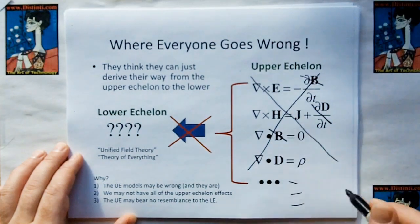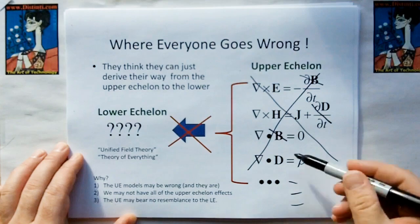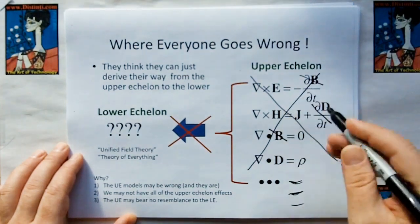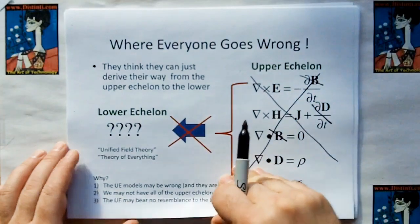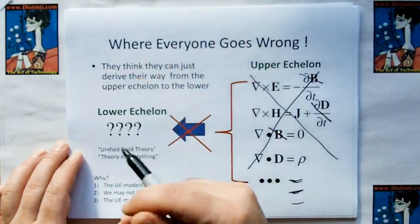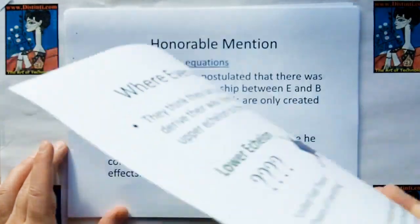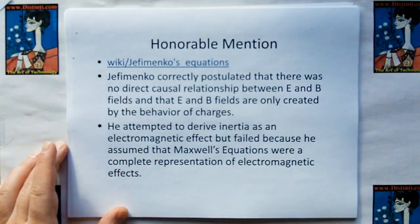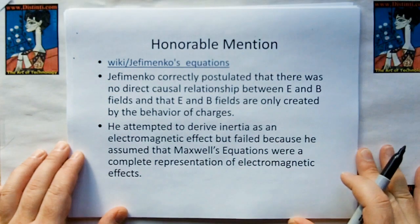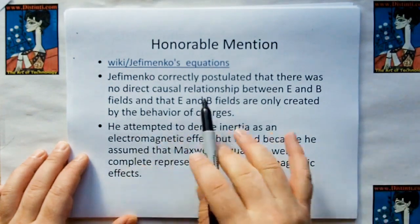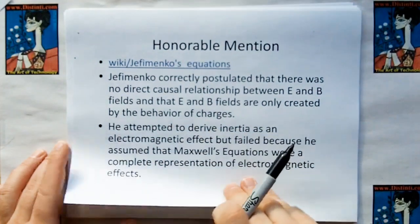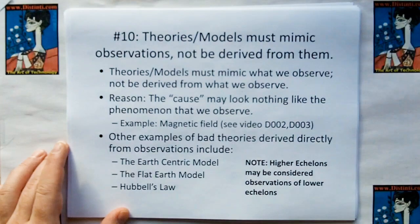And there may be other effects here that we aren't aware of as yet, which there is, because new electromagnetism shows there's at least two other effects that aren't included, even if these were right. And so then again, the upper echelon may bear no resemblance to the lower echelon. That's part of the problem. Although I have to give honorable mention to a man by the name of Jefimenko. I hope that's the right way to pronounce it. He correctly postulated, and I'll let you read this on your own. I'm not going to read this slide for you, so you can pause and read it if you like.